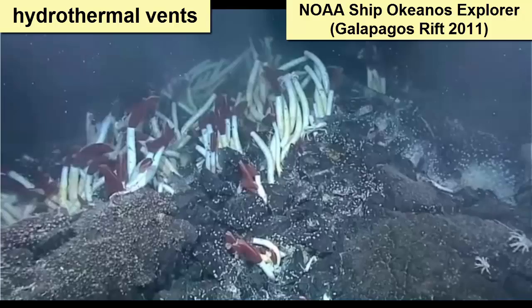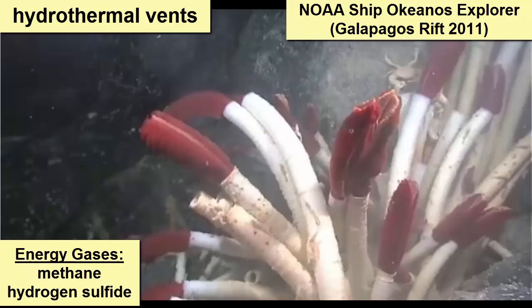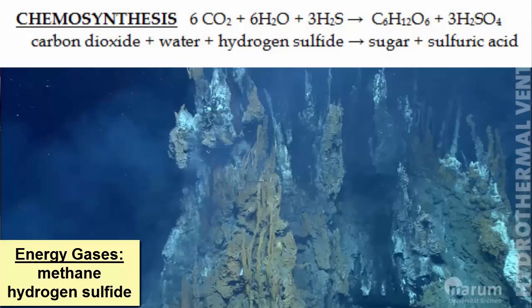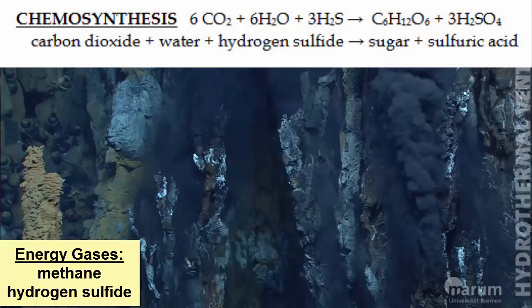They are found where there is an unusually large concentration of energy gases percolating up from inside the earth, either methane or hydrogen sulfide, or a combination of the two. Chemosynthesis is the major energy transfer mechanism that supports this food chain, as bacteria use the energy stored in these gases to produce sugars.